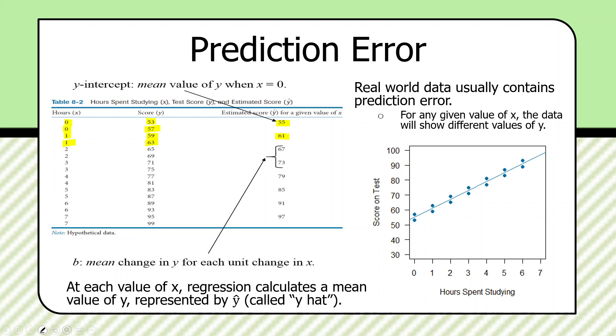So, now, the point here is that the intervals along these estimated values of y, y-hat, represent mean changes. B, or the regression coefficient, is the mean change in y for each unit change in x.